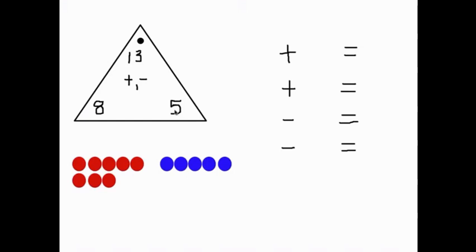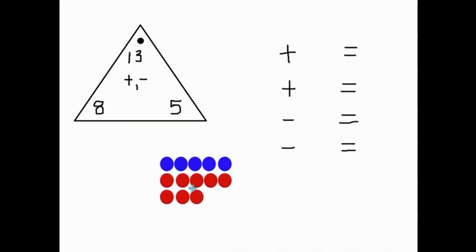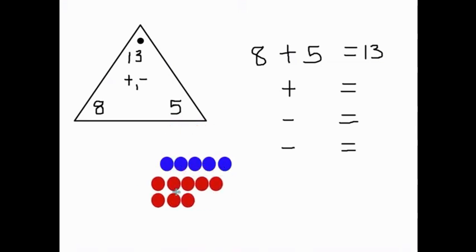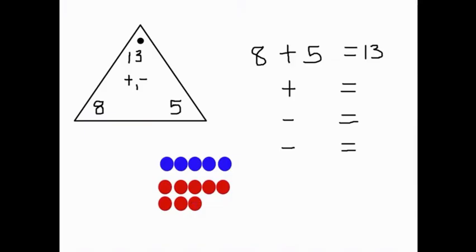Next, we're going to look at a triangular fact card. As you can see, we are using the numbers 13, eight, and five. So I know that eight plus five, or five plus eight, equals 13. So I'm going to write that first fact here: eight plus five equals 13. Now using the commutative property, I can switch the order of those addends around. So instead of eight plus five, I can say five plus eight, which equals the same amount. Five plus eight also equals 13.